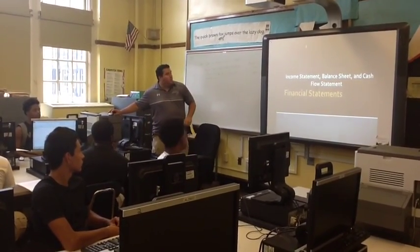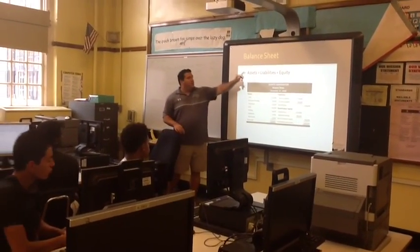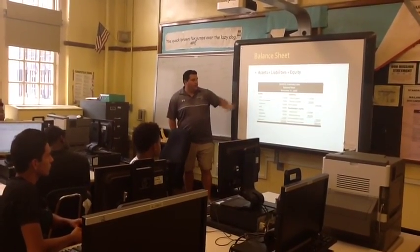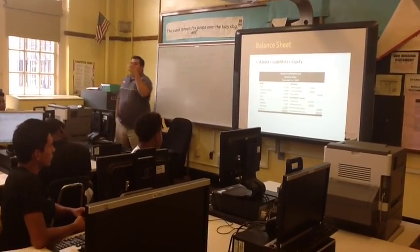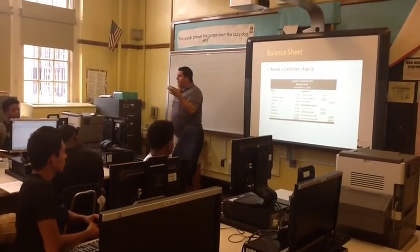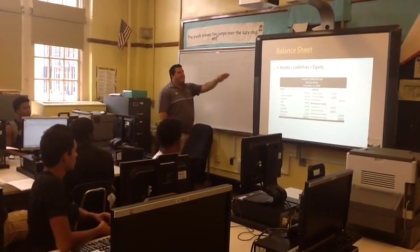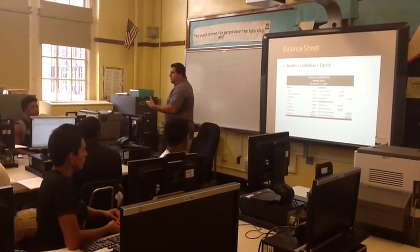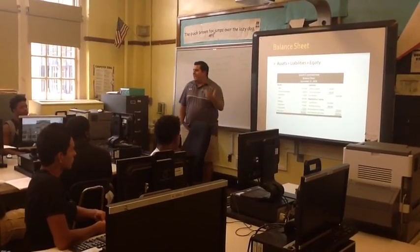We're going to start right now with balance sheets. The fundamental accounting equation is assets equals liabilities plus equity. You have here an example of a business's balance sheet. Anything you own as a business or personally fits into one of these categories. If you own it and you use it, it's an asset. For a business, anything that can be used to generate income is an asset. For a pizzeria, the oven is an asset.